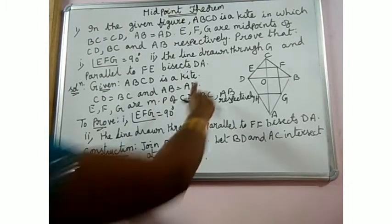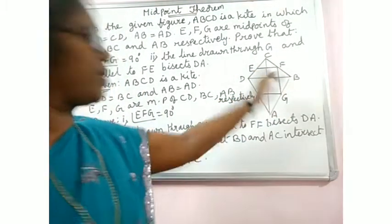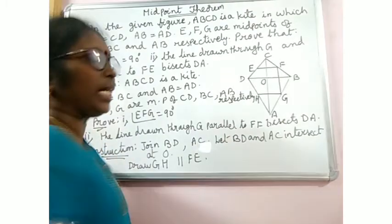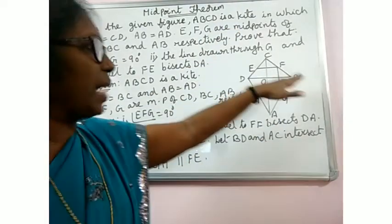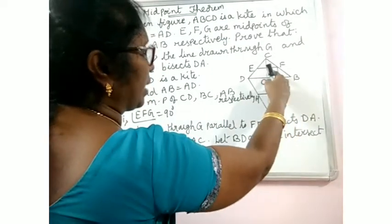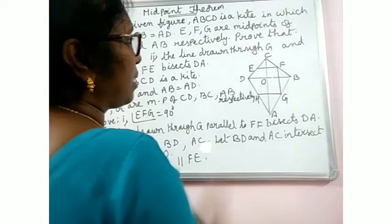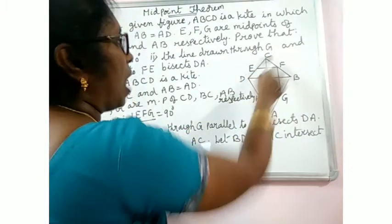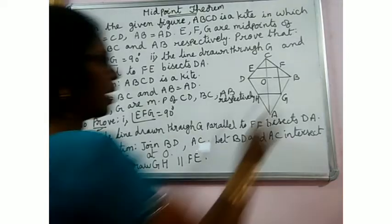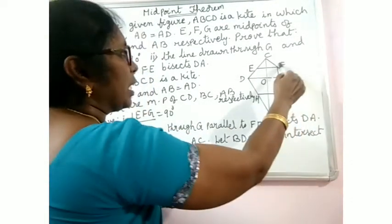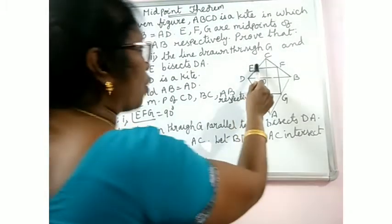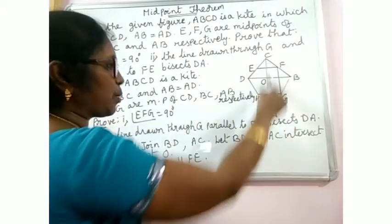Now to prove it: you know that in a kite, the diagonals intersect each other at 90 degrees — one diagonal bisects the other at right angles. That means AC bisects BD at 90 degrees. In triangle CDB, E and F are midpoints of DC and BC, so EF is parallel to BD. In triangle BCA, F and G are midpoints of BC and AB, so FG is parallel to CA.